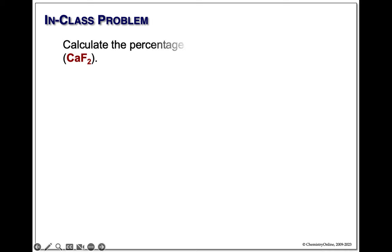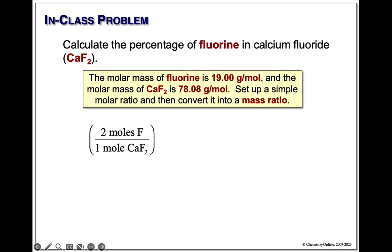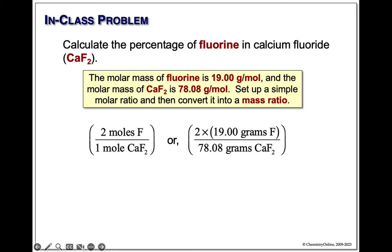Let's look at fluorine in calcium fluoride CaF2. Molar mass of fluorine is 19 g/mol; molar mass of calcium fluoride is 78 g/mol. The mole ratio is 2 fluorines in every CaF2. Convert to mass ratio: 2 fluorines times 19 g/mol each, over 78 g/mol for one CaF2. To get the percentage: 2 times 19 divided by 78 times 100 — about 48.7% fluorine.